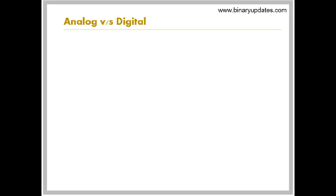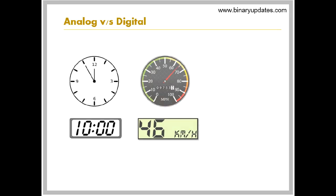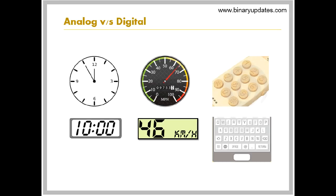What we hear, smell, see and talk, all are analog signals. Some real life examples of analog and digital are Clock, Speedometer, Keypad.